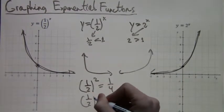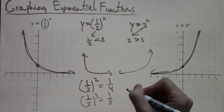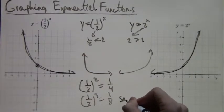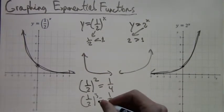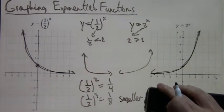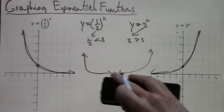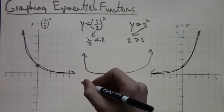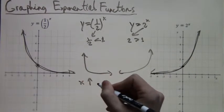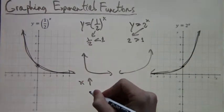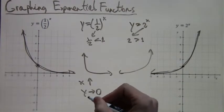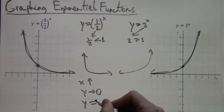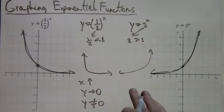And notice the reason why one half to the x gets closer and closer to zero when x is increasing is because every time we increase x, we are multiplying by another one half. So we end up with a fourth and an eighth—it gets smaller and smaller. So as x increases, every time we multiply one half again, it gets smaller, y gets smaller. But it does never equal zero.